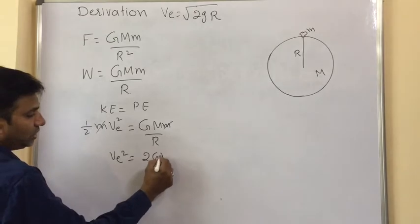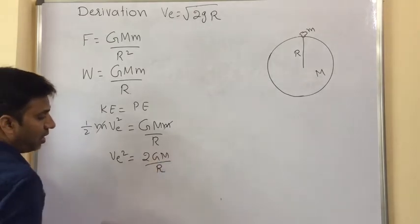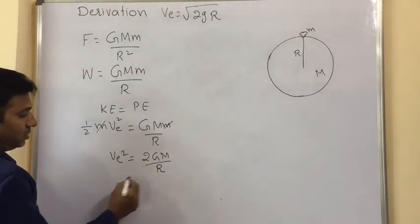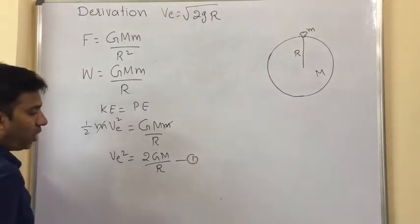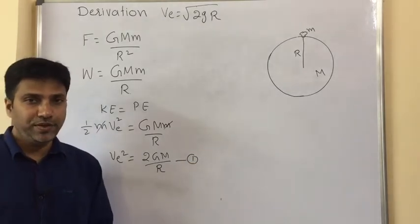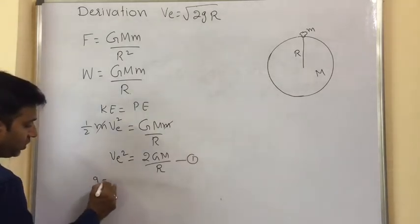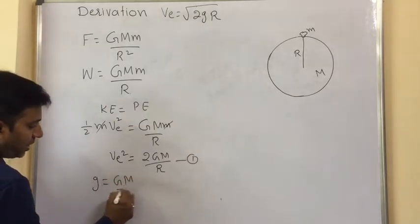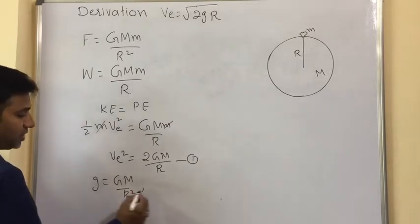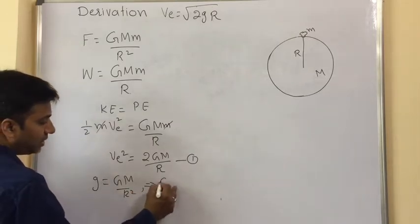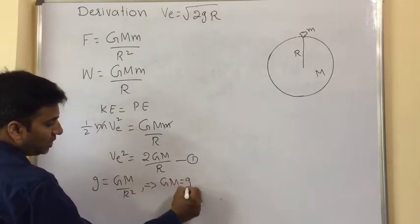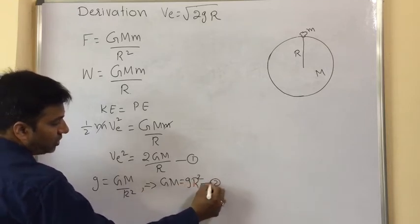Now we have to use the relation between small g and capital G. That is given by g is equal to GM by R square. Rearranging this equation, we will get GM is equal to gR square. This is equation 2.